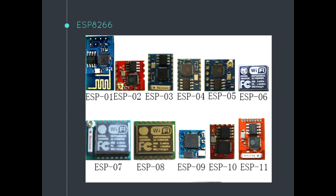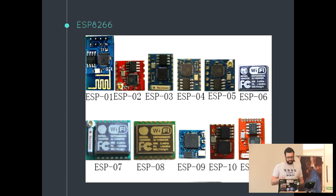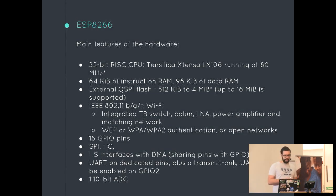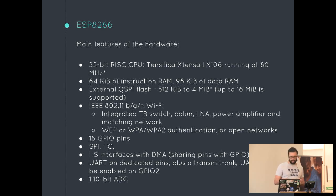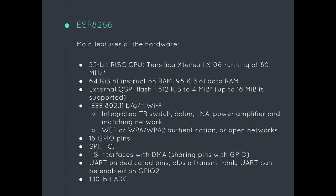The ESP-01 was the first version they brought out — a bit of a pain if you're not keen to solder and work with a breadboard. As it moved on it got more pins, and other companies started adding things like USB-to-UART. Some you get with Arduino also connected to it so you could expand the pins. It's got a 32-bit 80 MHz CPU, single core, overclockable to 160 MHz, 96 KB of data RAM and 64 KB of instruction RAM. It has Wi-Fi with WPA, WPA2, WEP, and 16 input-output pins.